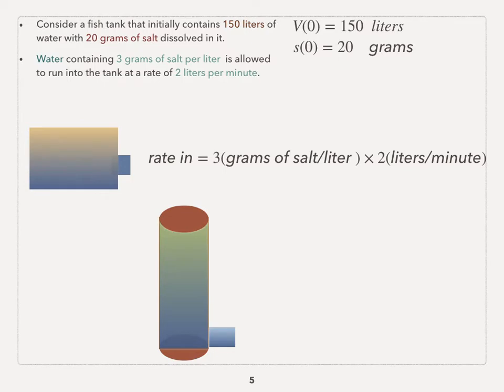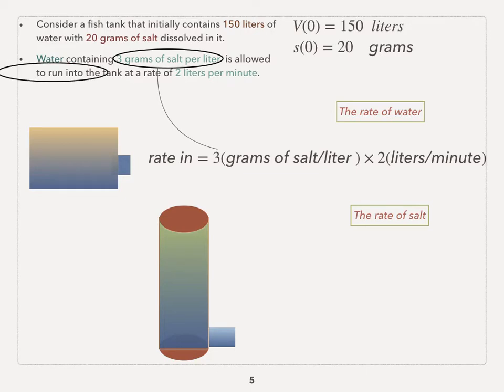Second, we want to talk about the rate in. The rate in is the product of the rate of salt and the rate of water. It's pouring salt and water at the same time. It's saying that the water containing 3 grams of salt per liter, which indicates the rate of salt, and it's allowed to run into the tank at the rate of 2 liters per minute, which indicates the rate of water.